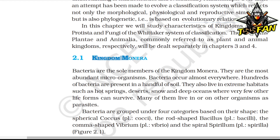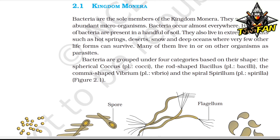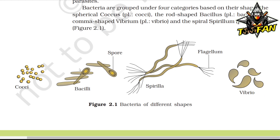Kingdom Monera: Bacteria are the sole members of Kingdom Monera. They are the most abundant microorganisms and occur almost everywhere. Hundreds of bacteria are present in a handful of soil. They also live in extreme habitats such as hot springs, deserts, snow, and deep oceans where very few other life forms can survive. Many live in other organisms as parasites. Bacteria are grouped under four categories based on their shapes: spherical coccus (plural cocci), rod-shaped bacillus (plural bacilli), comma-shaped vibrium (plural vibrio), and spiral spirillum (plural spirilla).